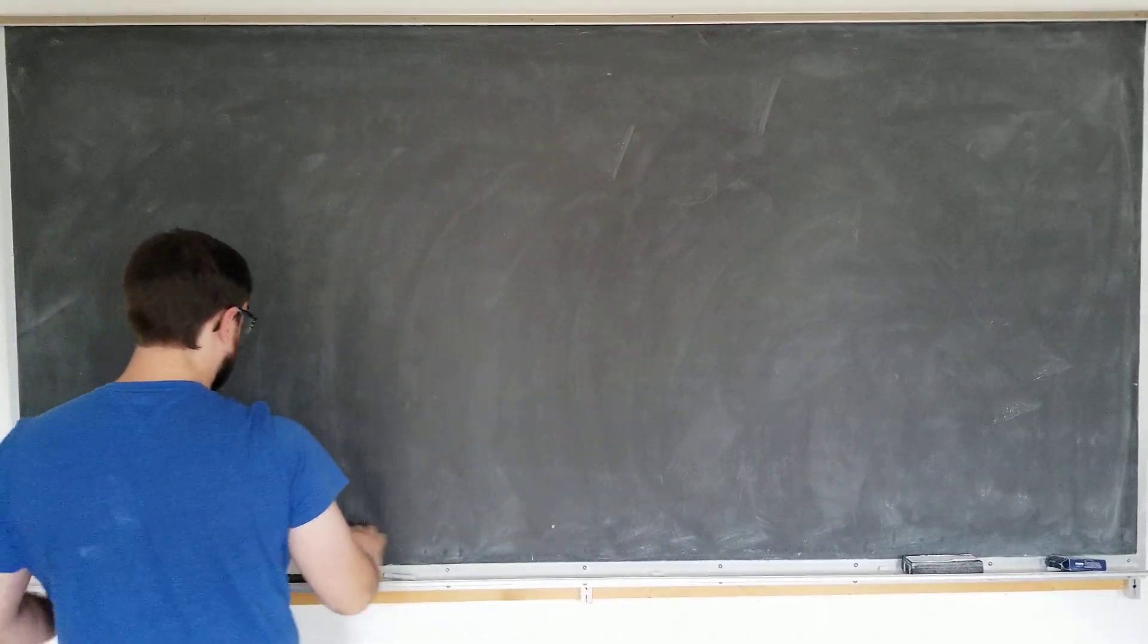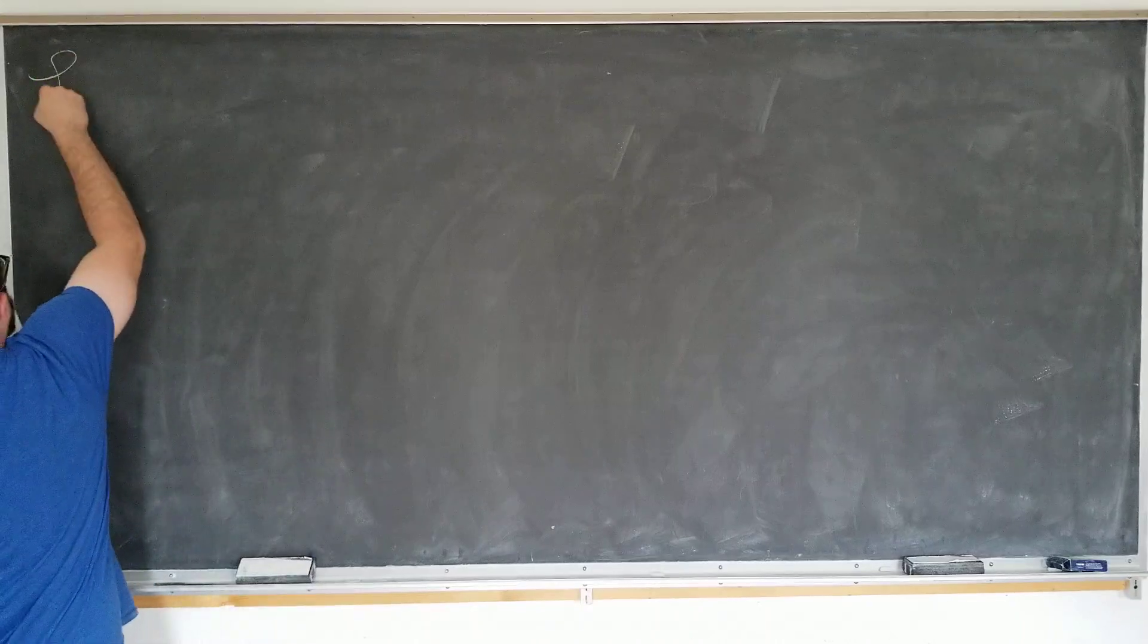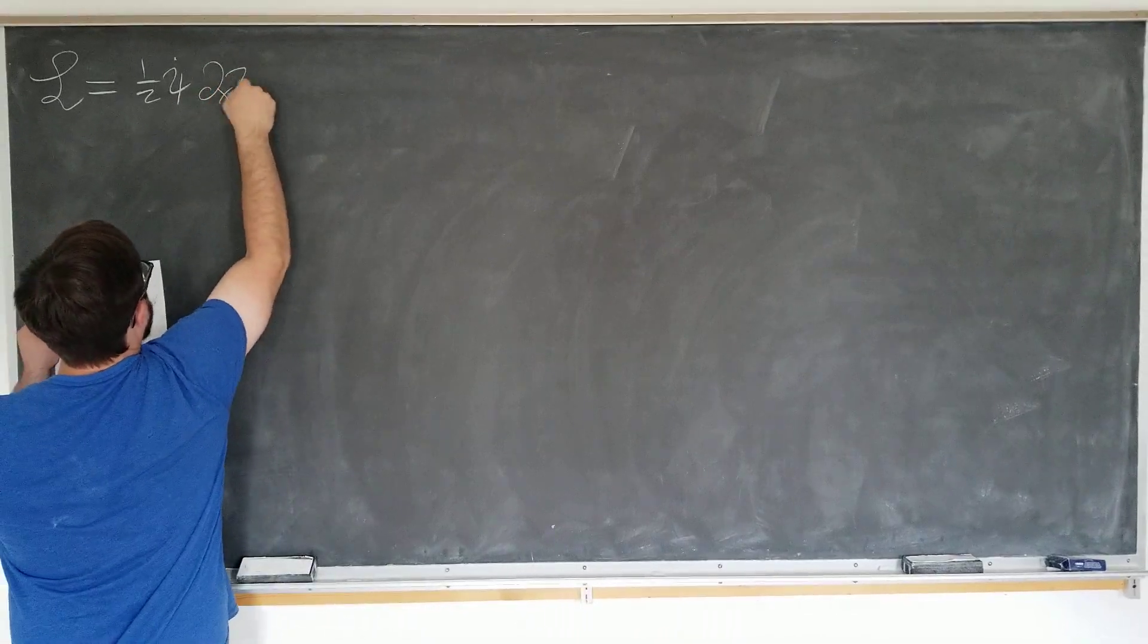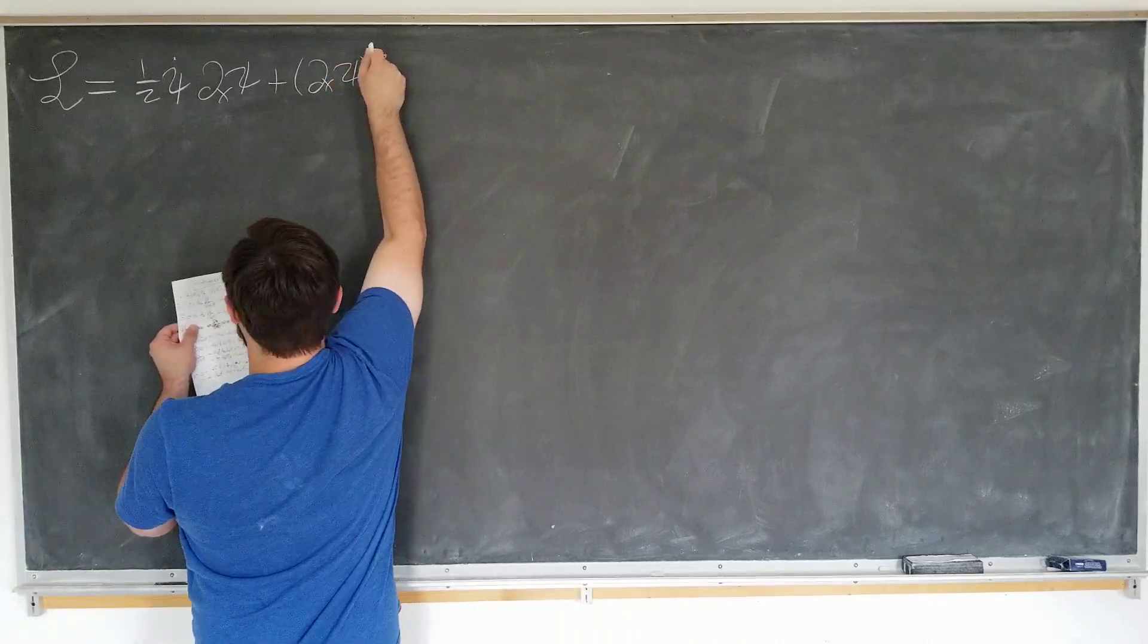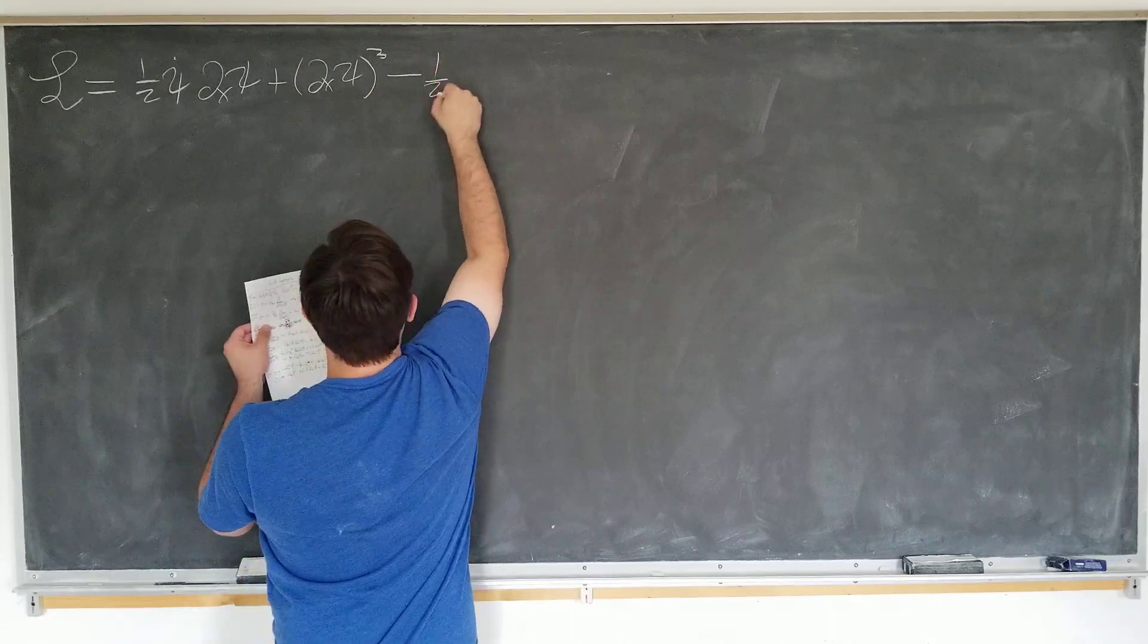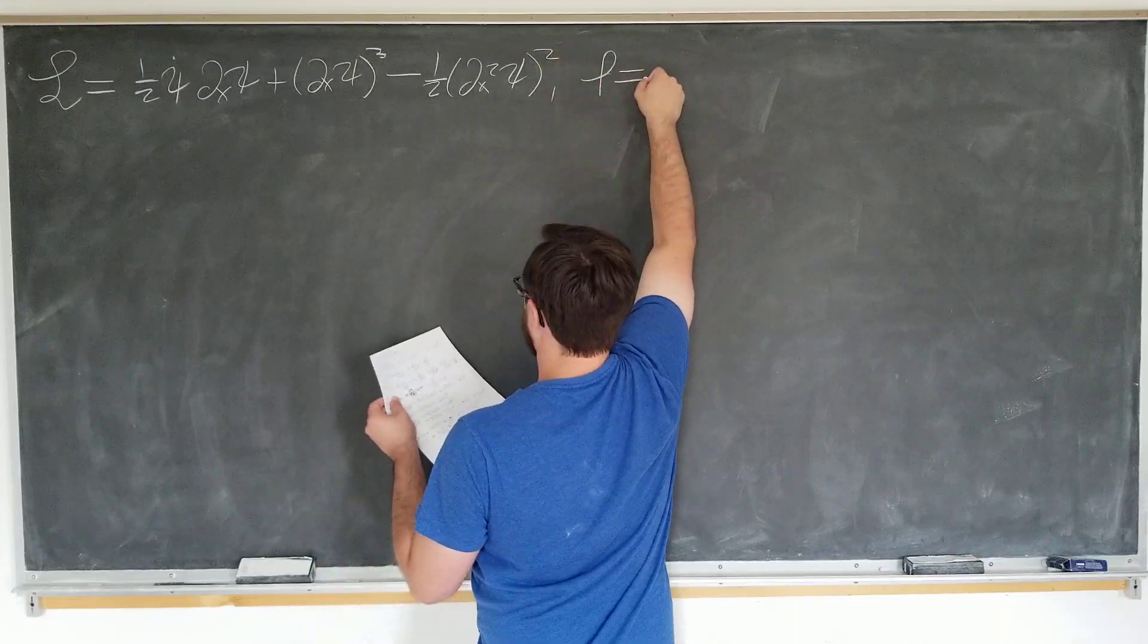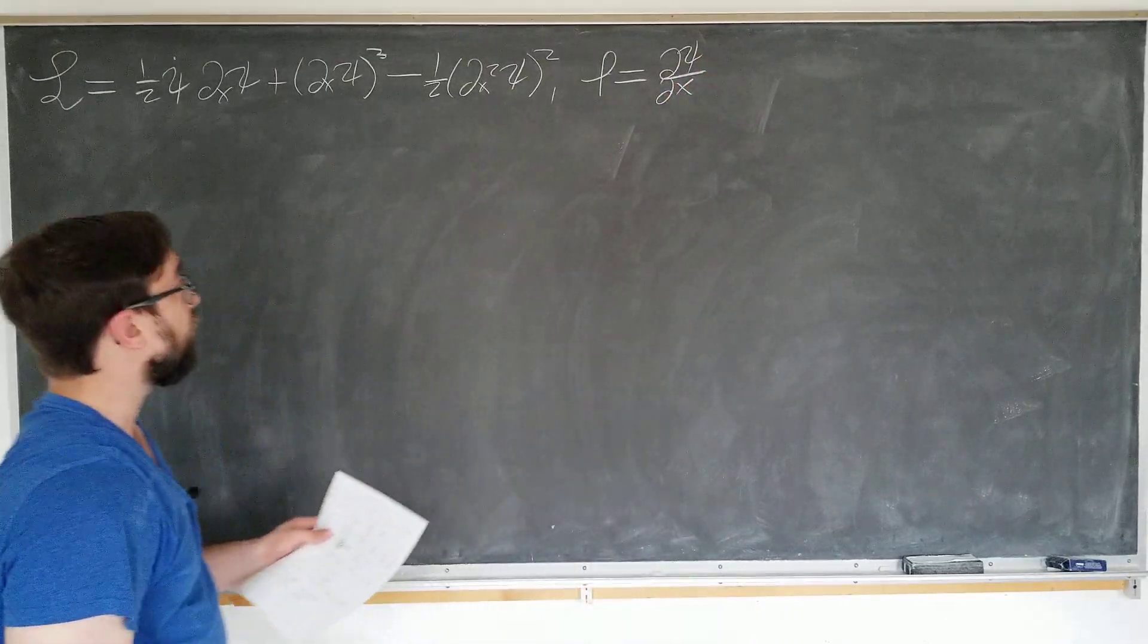And it's kind of a strange one. Let's be considering the following Lagrangian. 1 half phi dot, yes that's not a typo, dx phi plus dx phi cubed. Sorry, psi. These are psi. Everything is psi. Minus 1 half dx squared psi squared, where original variable phi is defined to be d psi by dx. Pretty strange.